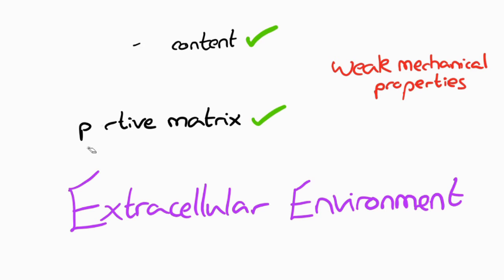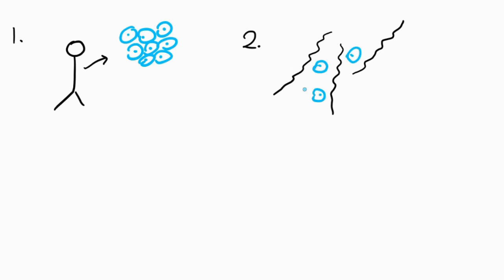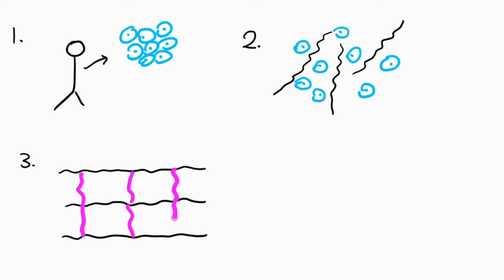The tissue engineering method can be split into four steps. First, take healthy cells from the patient and grow the sample. Second, place these cells into the precursors for the gel, that is the polymers in a solution. Third, transfer the solution into a mold and add cross-linking to form a hydrogel.